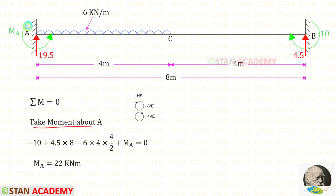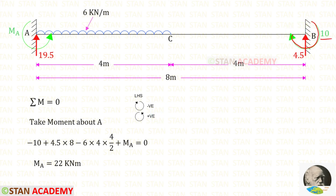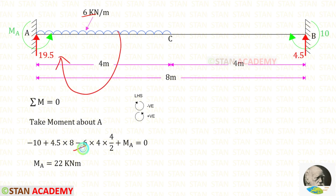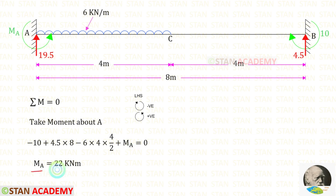Now let us take moments about point A and find MA. We follow the left-hand side rule: clockwise is negative and anti-clockwise is positive. MB is acting clockwise so it is negative. RB is acting anti-clockwise so it is positive, with distance 8. The UDL is acting clockwise so it is negative. Assuming MA acts anti-clockwise, it is positive. We get a positive value for MA, confirming MA acts in the anti-clockwise direction.